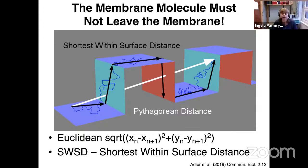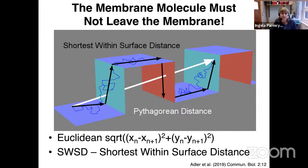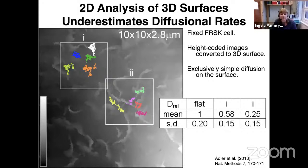A key problem is that if you assume a flat cell, you collapse the 3D track to 2D, which is problematic because membrane molecules stay in the membrane — lipids and proteins don't leave it. Collapsing the track allows the molecule to apparently leave the membrane, which physically cannot happen. Instead, you need the shortest within-surface distance. We had high-resolution topography images of fixed cells and simulated diffusion in different areas. In regions with more topographical features, diffusion was only one-quarter of what it would be on a flat surface — approximately a factor of four.